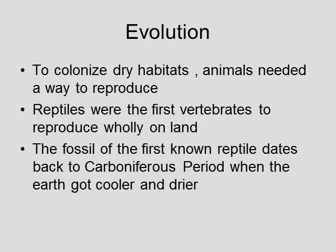A little bit about the evolution of reptiles: these were the first animals able to colonize dry habitats, and the first vertebrates to live completely on land. Amphibians were the first to be on land, but they always have to go back to water to reproduce and live part of their life cycle in water — usually in their larval stage. For reptiles, this is not true.